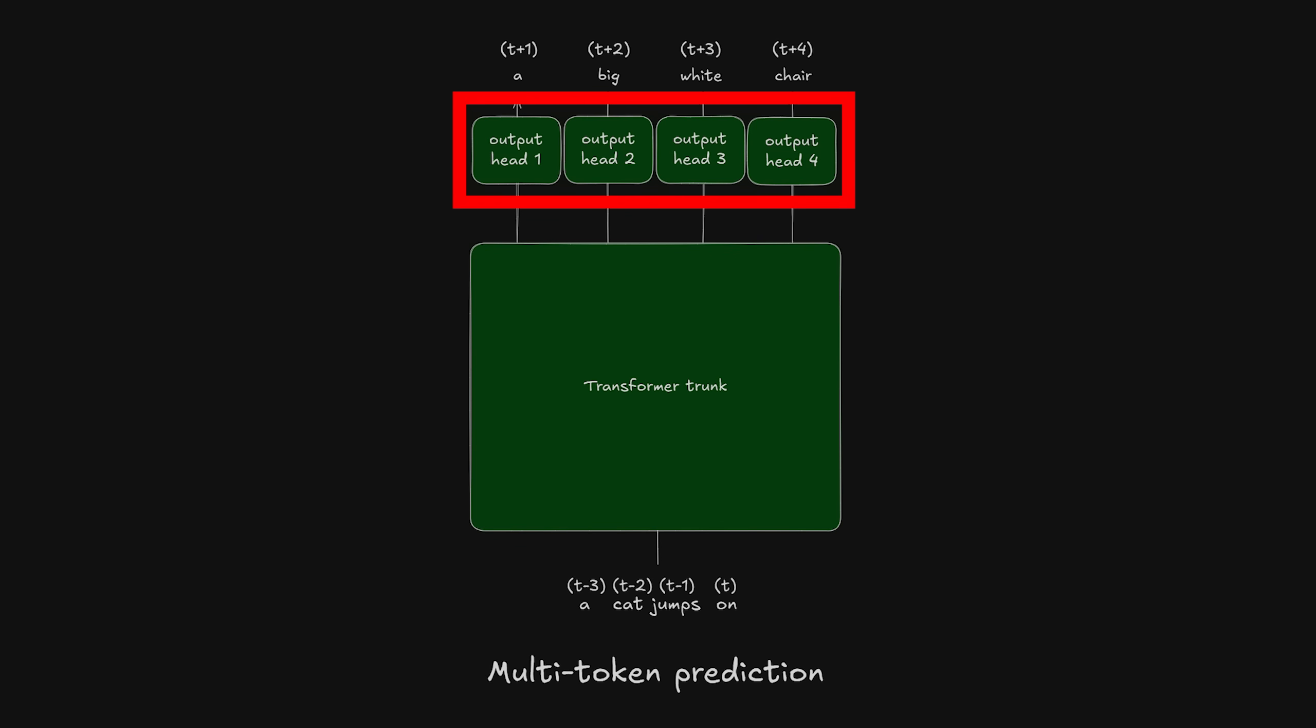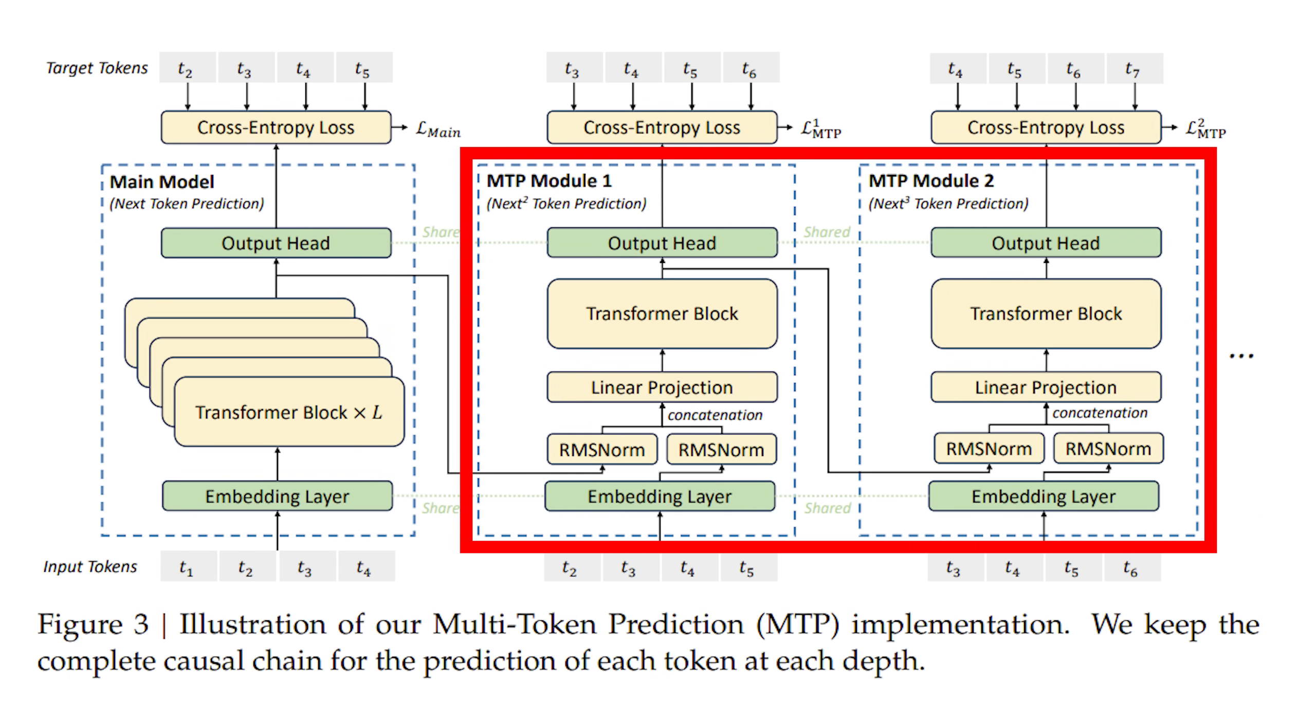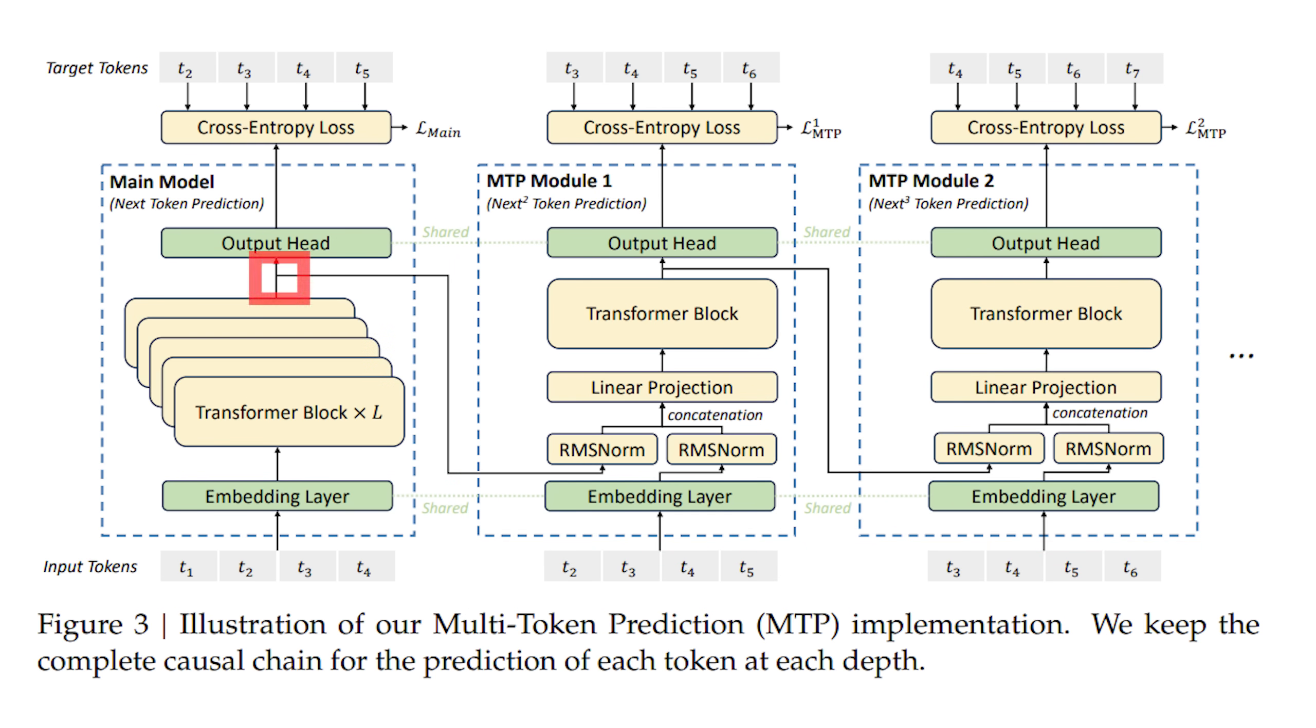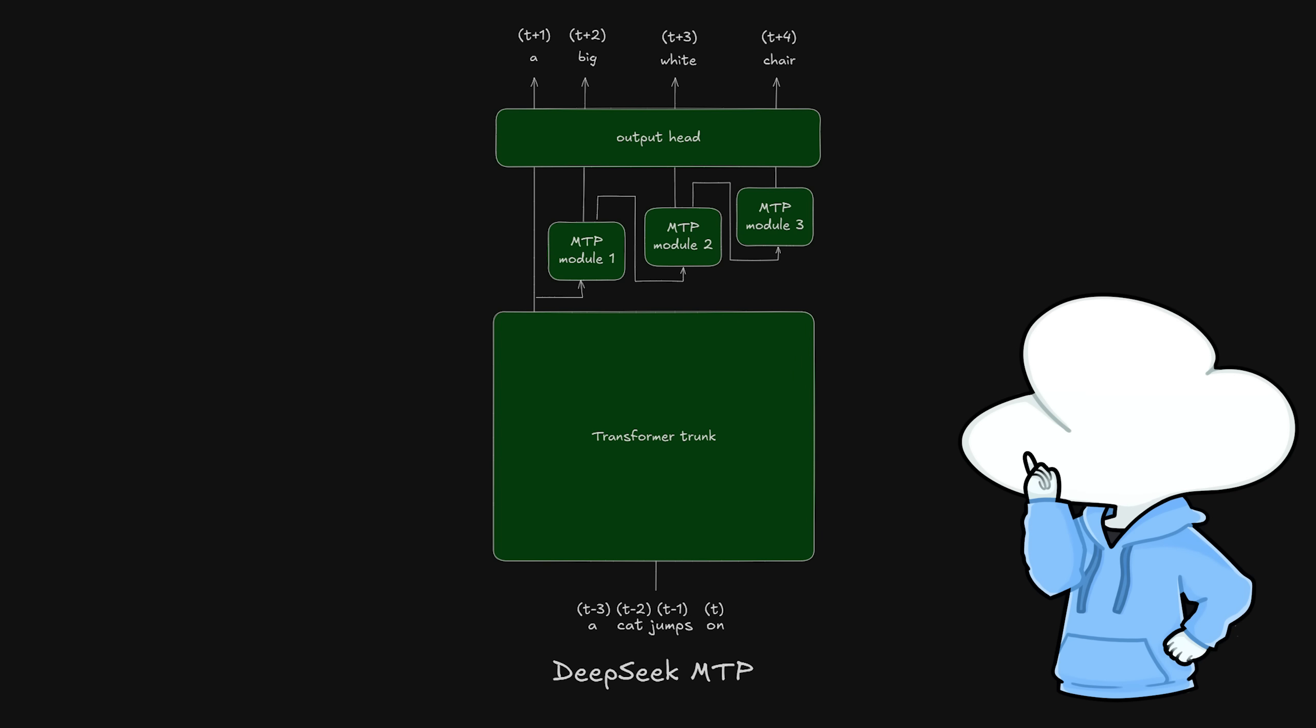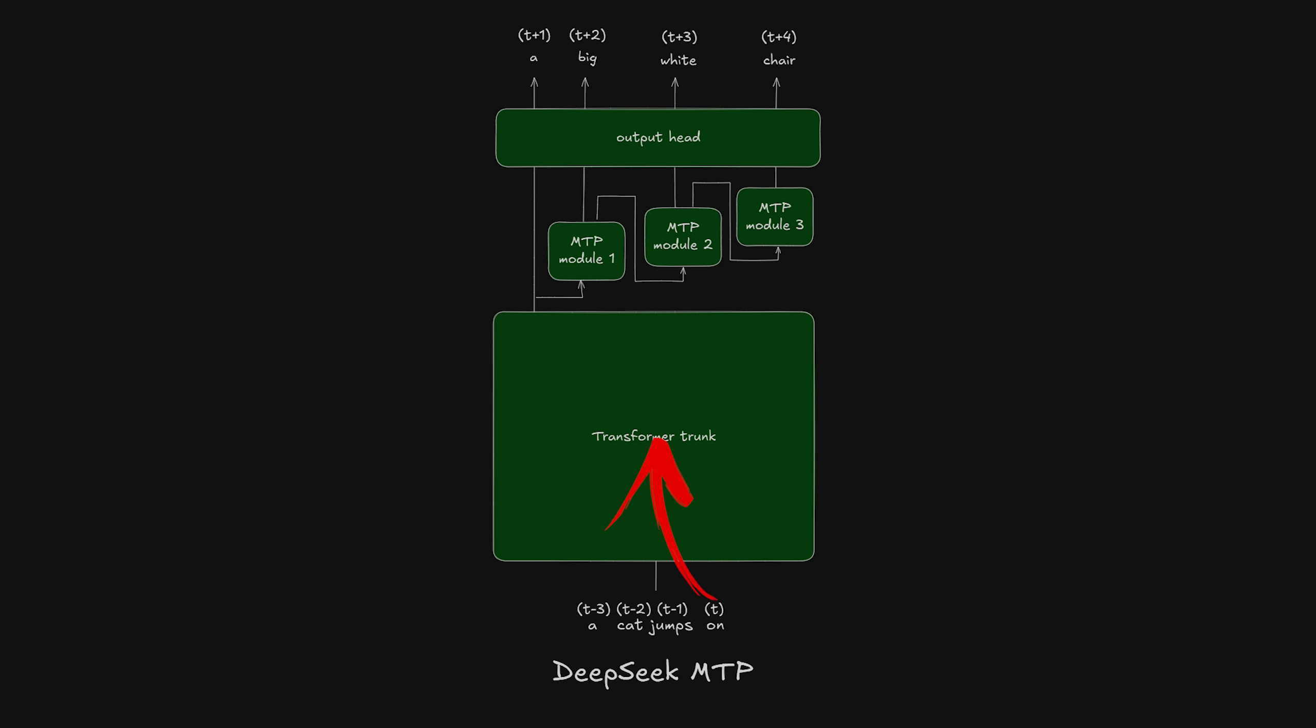So what's different here is that instead of having those parallel independent heads, which is the most inconsistent part of MTP, DeepSeek V3 uses sequential MTP modules to make sure information can still be passed between T+1 prediction and T+2 prediction. How it works exactly is that after the main body of the transformer model finishes processing the input up to token T, producing a hidden state, let's call this H0, then the MTP process begins.